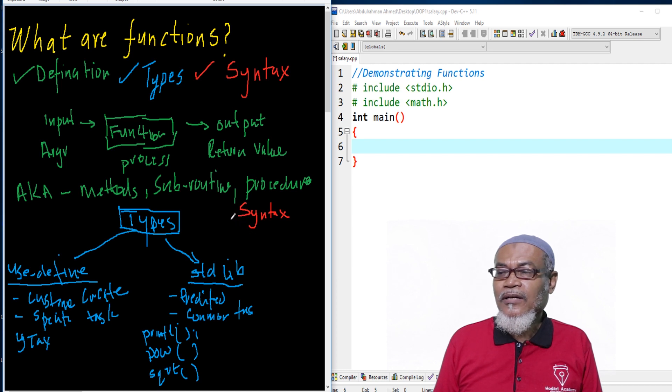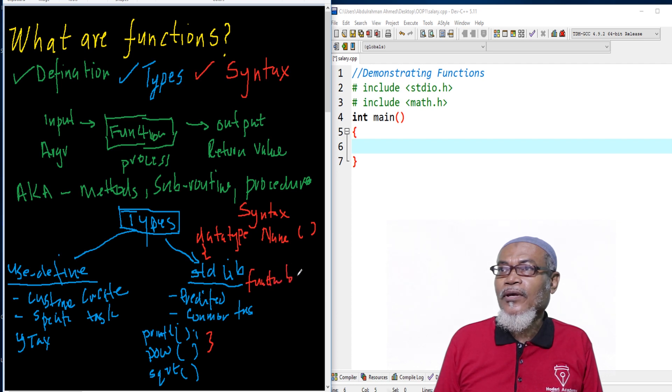The syntax of a function is very basic. You have to have a data type. Then you will have to have a function name. Then you will have to have opening and closing brackets, and then opening and closing curly brackets. Inside here, you are going to have the function body. This is how it is.